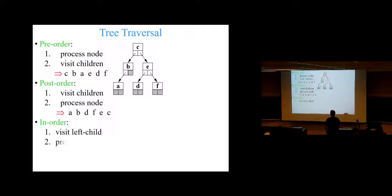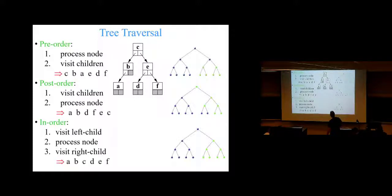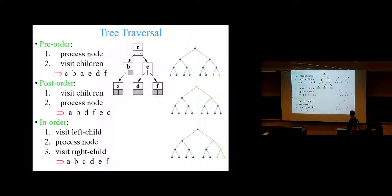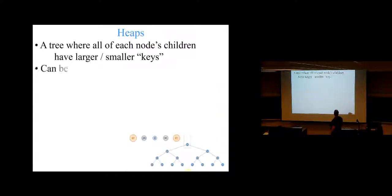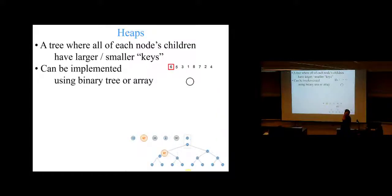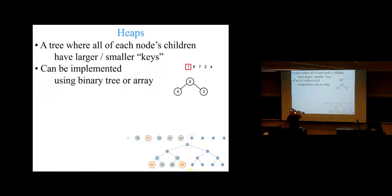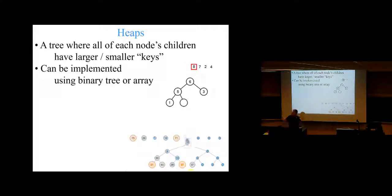Tree traversals — you can have pre-order, post-order, in-order on a binary tree, and you get three different sequences out of these things. I assume you've seen these before. And then heaps — basically it's a tree where it preserves a heap property: everything below you is less than you. That's a max heap. A min heap is where everything below you is greater than you. The point is that the max element is always at the root, and in every subtree, the max element is at the root of that subtree.